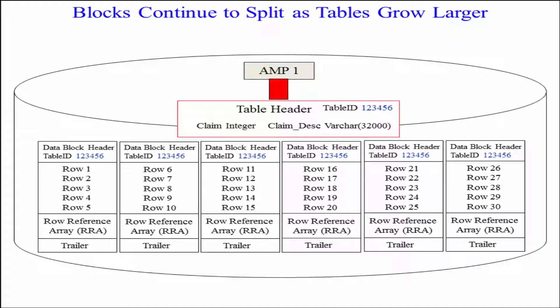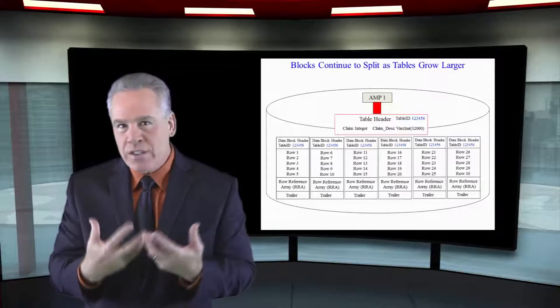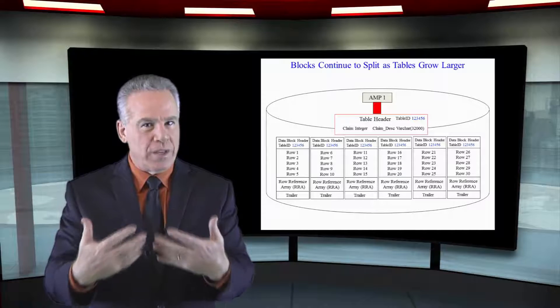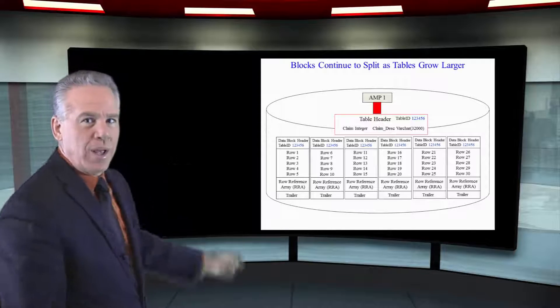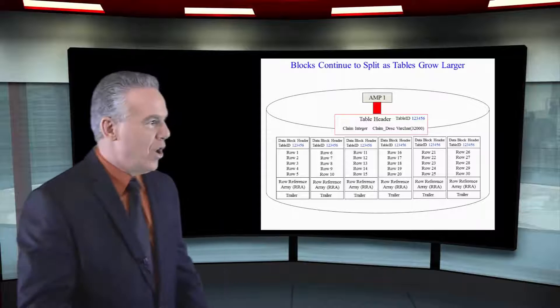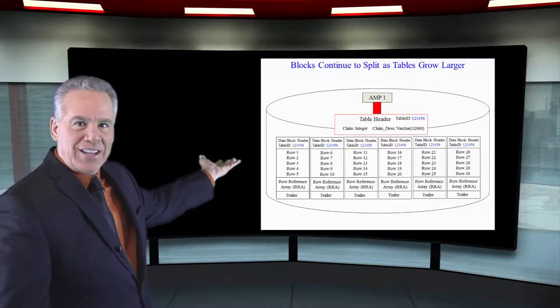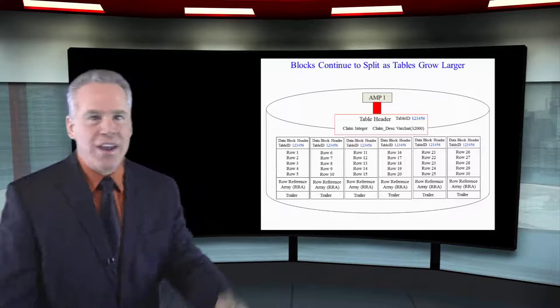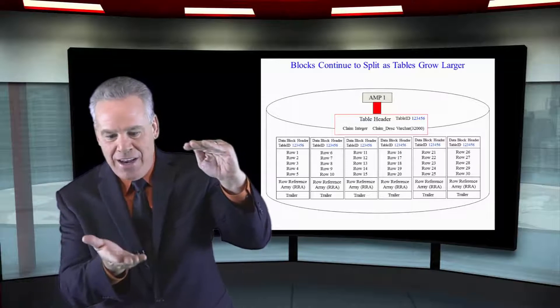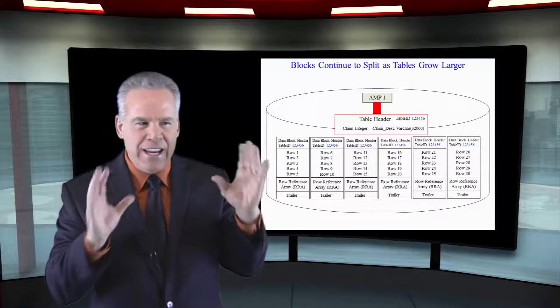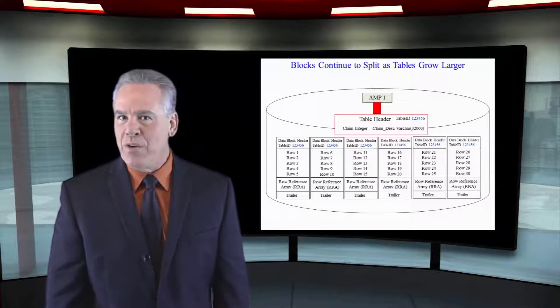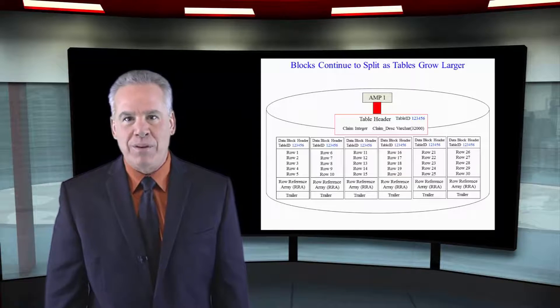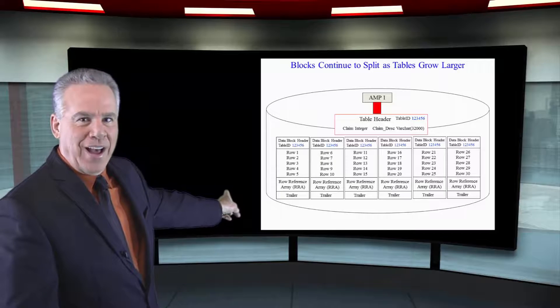When these blocks split, they are still in order. And, what's so clever about this, is once they know the row hash of something that they're looking for, the parsing engine will say, hey, that row is on this amp. And, the amp is only going to bring in one of these blocks because the master index really tells it the beginning row hash and the ending row hash in that block. So, even though this table on this amp has split into six blocks, the minute you give a primary index in the WHERE clause, they know which amp. And, they know which data block. Brilliant.